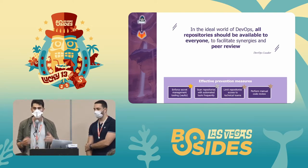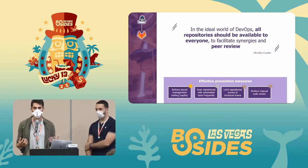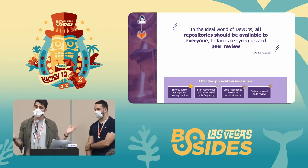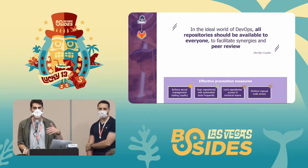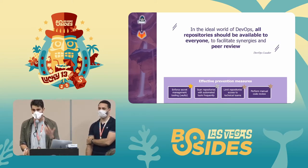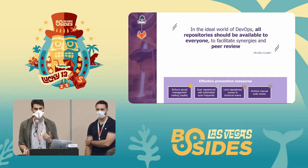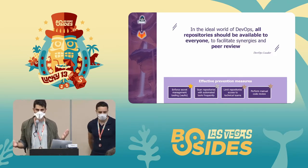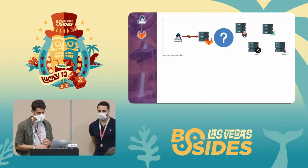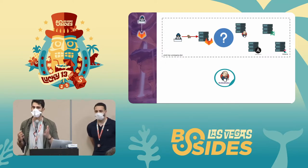Prevention measures include ensuring secret management tooling is available and that developers are trained to use it, scanning repositories with automated tools, limiting access to technical teams, and periodically performing manual reviews. An interesting technique we've seen with some clients is pushing fake secrets into repositories as honeypots — if someone tries to use them, an alert is triggered indicating an attacker is in the network.